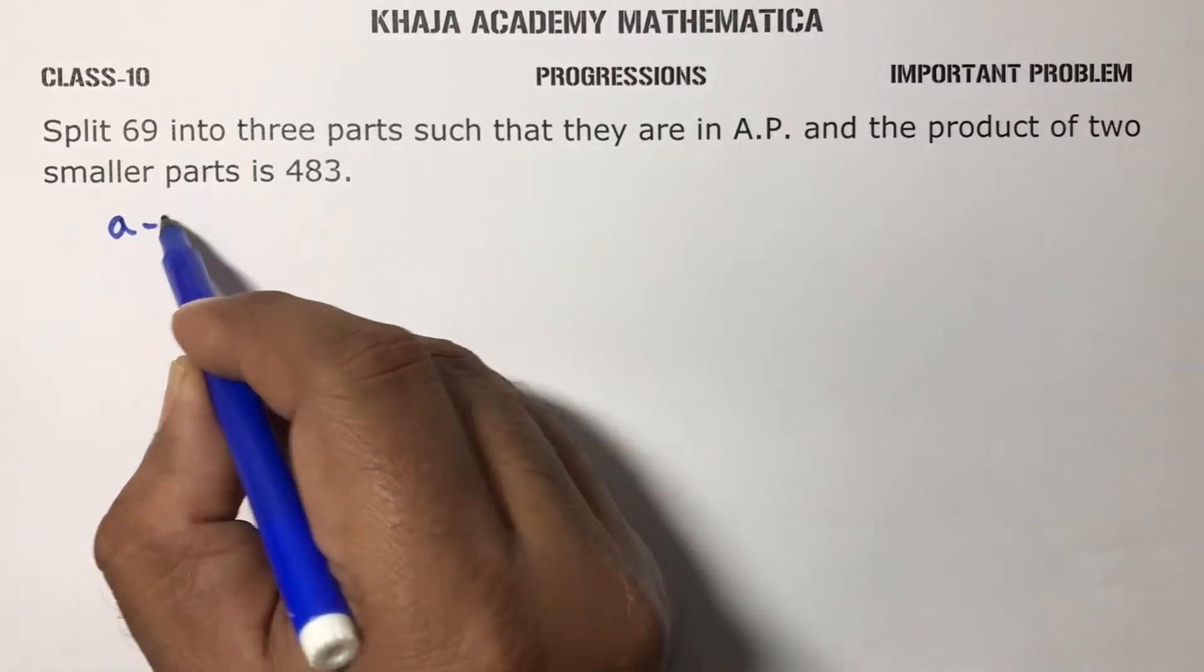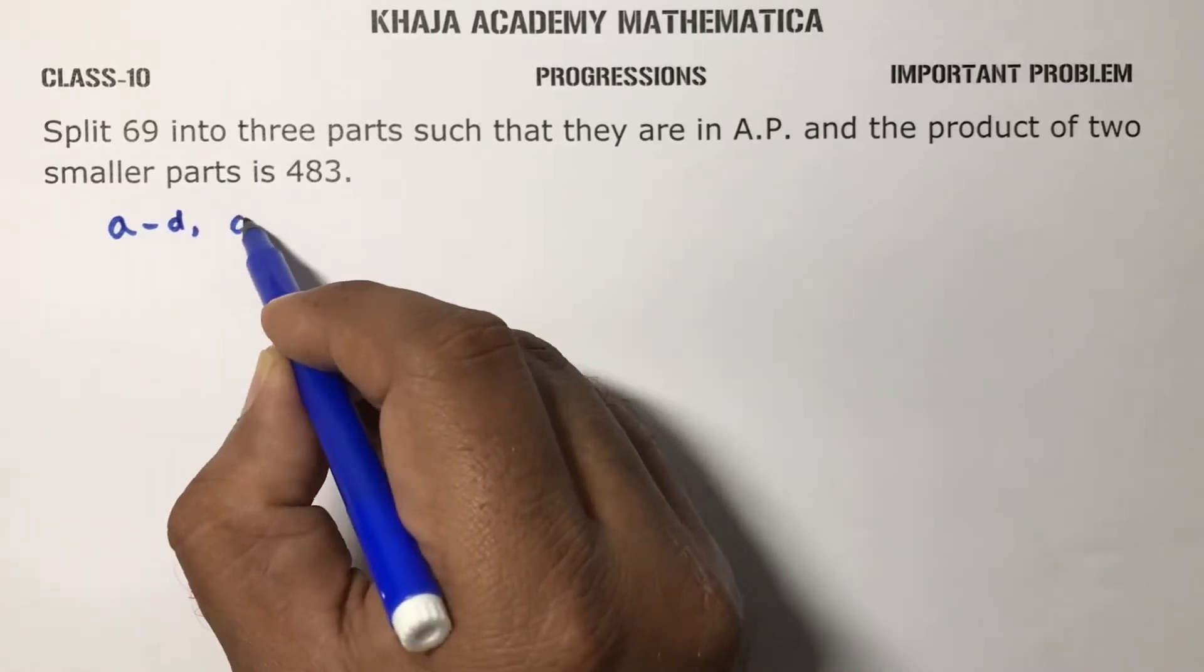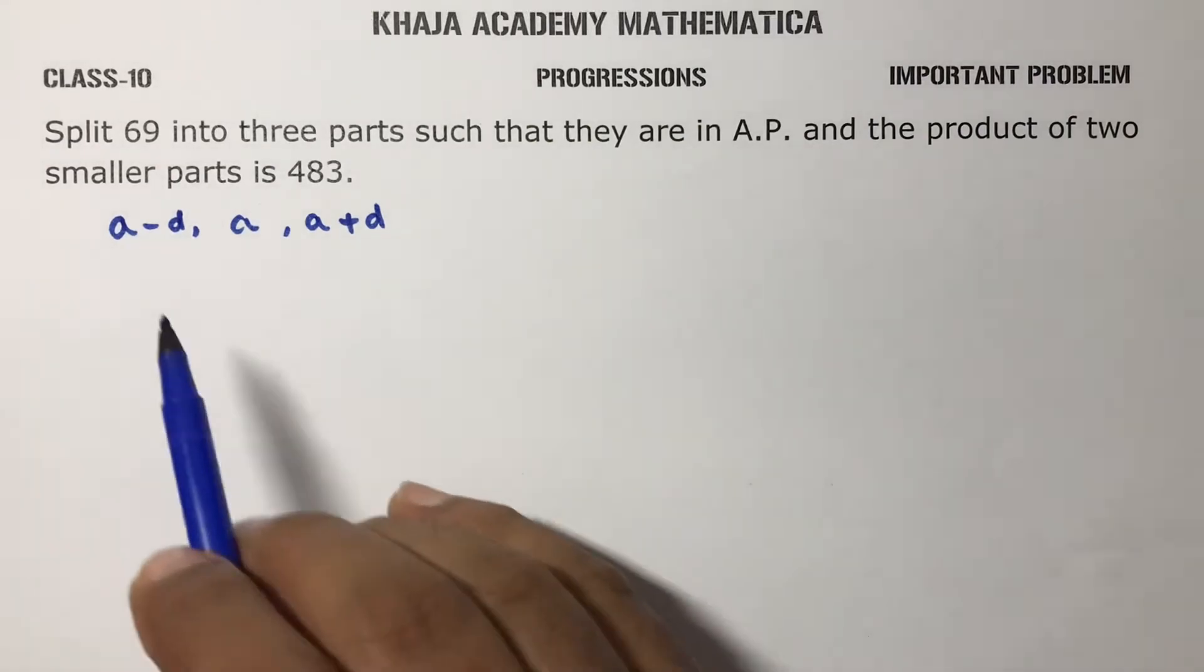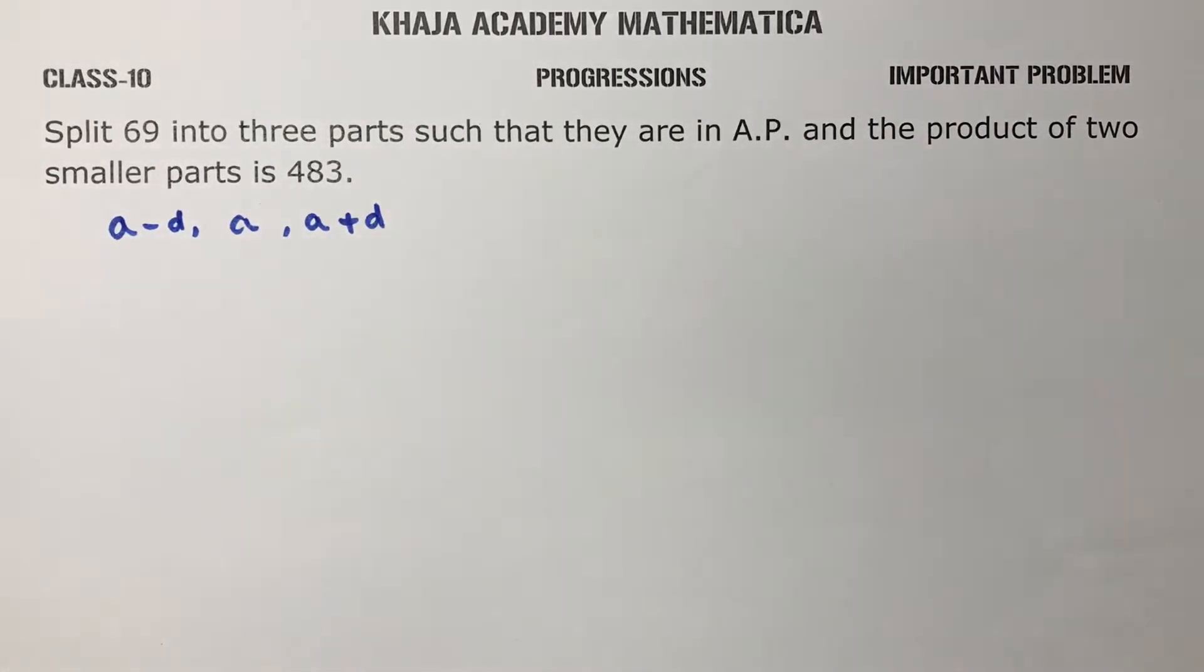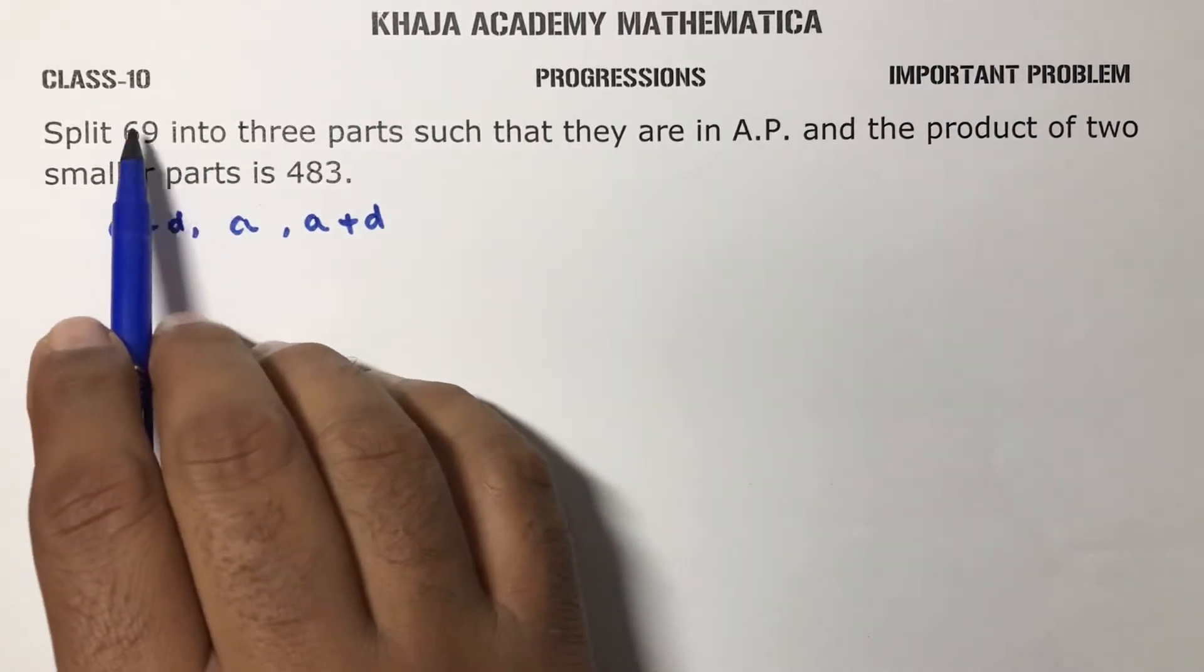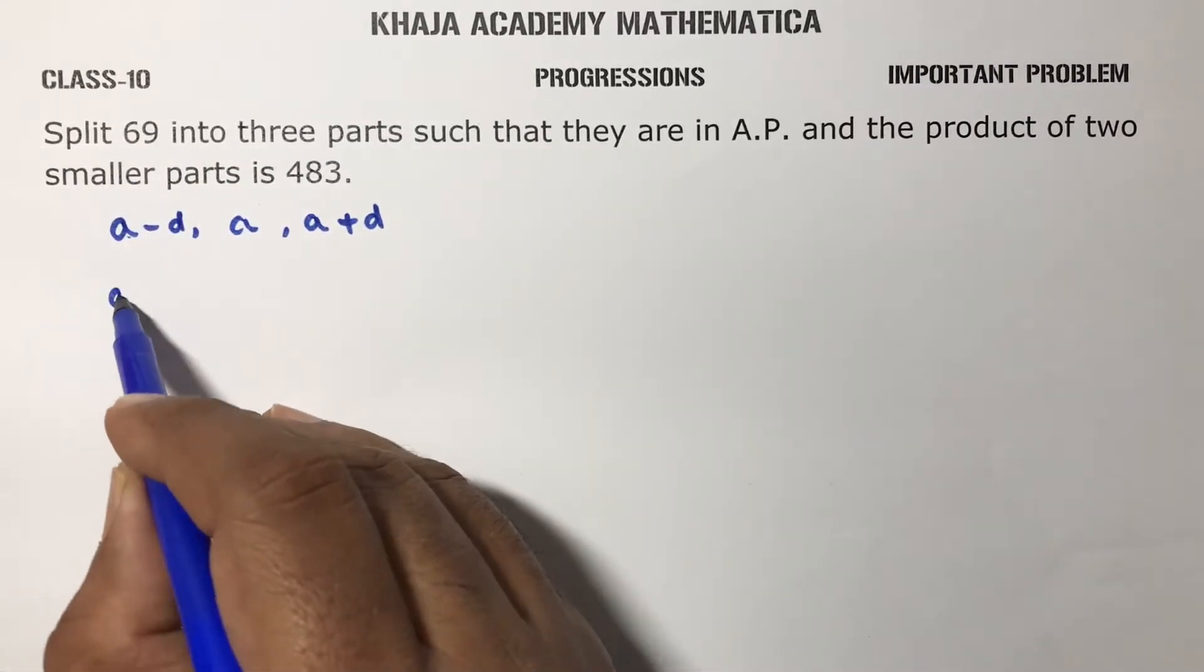Take three parts like this: a minus d, a, a plus d. Now see, 69 into three parts, so sum of three parts is how much? Like 69.